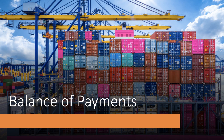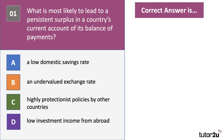Welcome to another set of six multiple choice revision questions on key topics — all past exam questions. This is a great chance to test your understanding of the balance of payments. For each question, press the pause button, have a go, then press play and we'll walk through the answers together. Here's our first question: what is most likely to lead to a persistent surplus in a country's current account of its balance of payments?